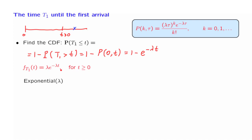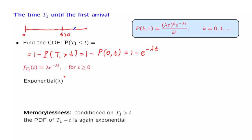For the exponential random variable, we have seen that it has certain memoryless properties. Namely, if I condition on the event that nothing has occurred until a certain time t, and I'm interested in the time from now until the first arrival occurs, this remaining time until the first arrival is again exponentially distributed. Looking ahead from this time, I will still wait an exponentially distributed amount of time until I see the first arrival. Whatever happened in the past and how long I have been waiting doesn't matter.